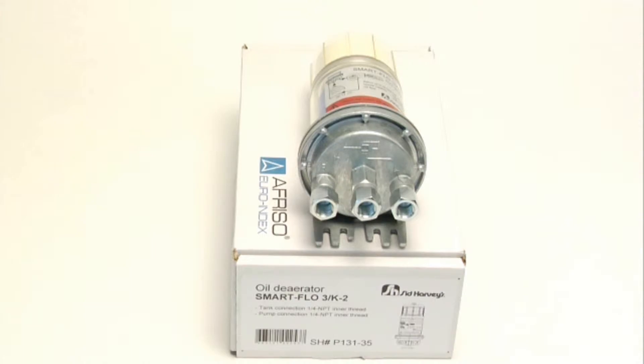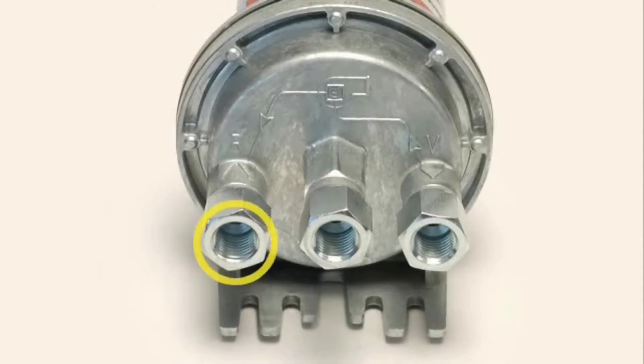Let's take a closer look at the oil deaerator. The bypass line comes in here. The line coming in from the tank comes in here. The third line is the line that feeds the pump.